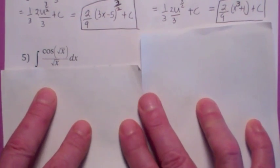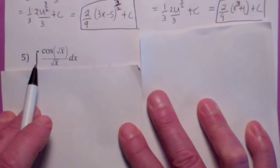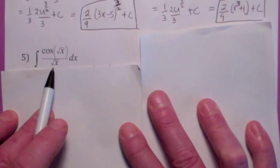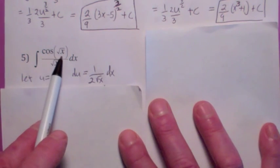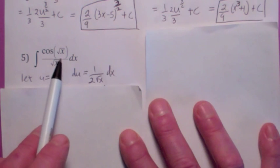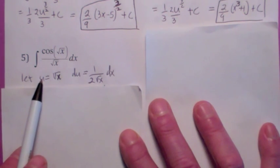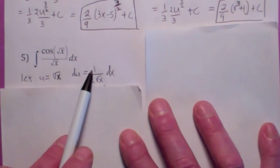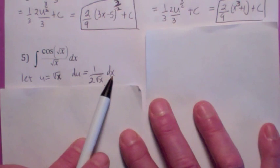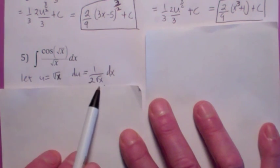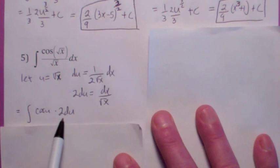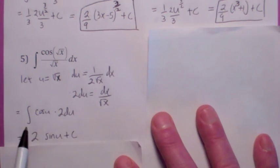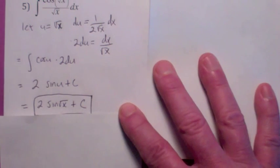There might be more than one way to do some of these. What's the antiderivative of cosine of square root of x over square root of x? Try something: let u equal square root of x, because then you'd have cosine u. The differential of u is the derivative of u with respect to x, which is 1 over 2 square root of x, times dx. So solve for dx over square root of x: it becomes 2 du. Plug it in — factor the 2 out, the antiderivative of cosine u is sine u. Don't forget the plus c, then write your answer back in terms of x.